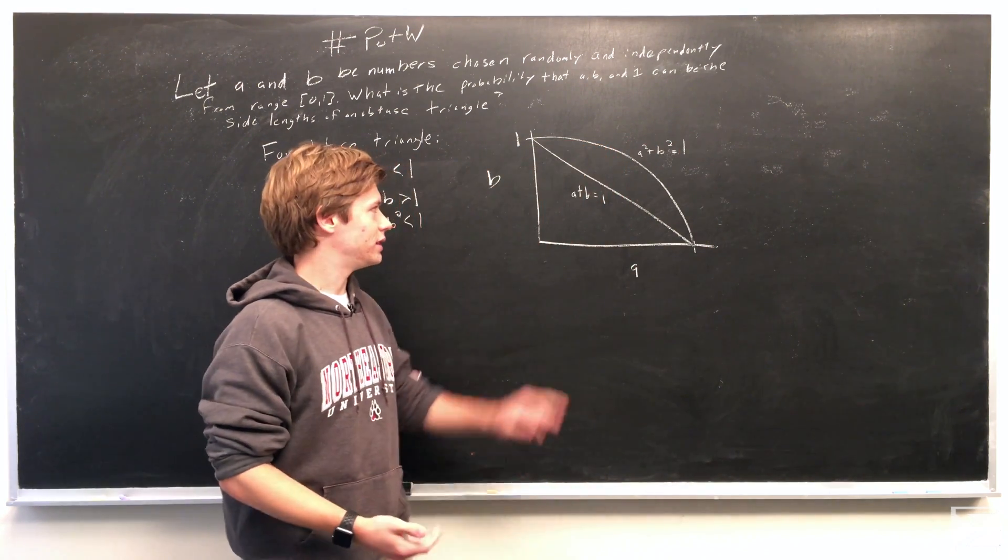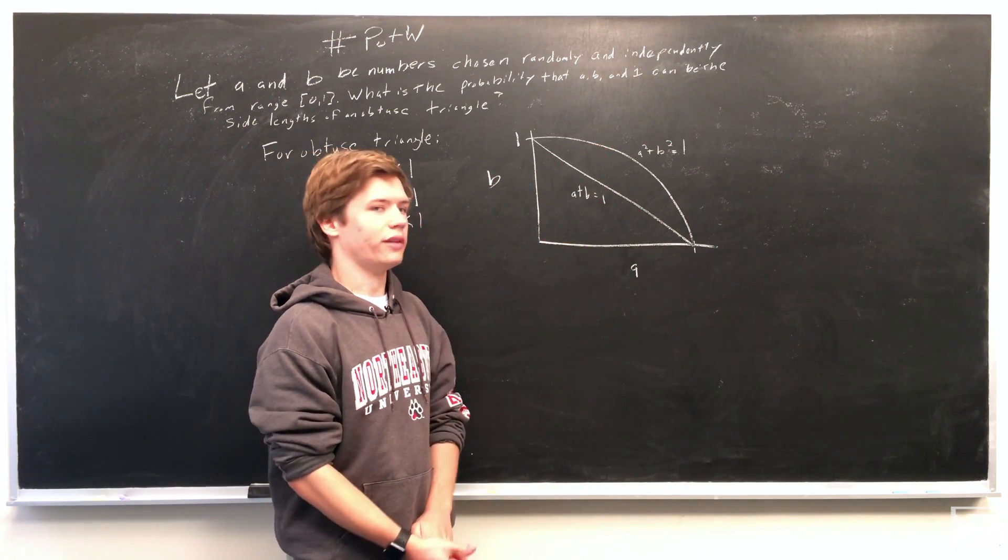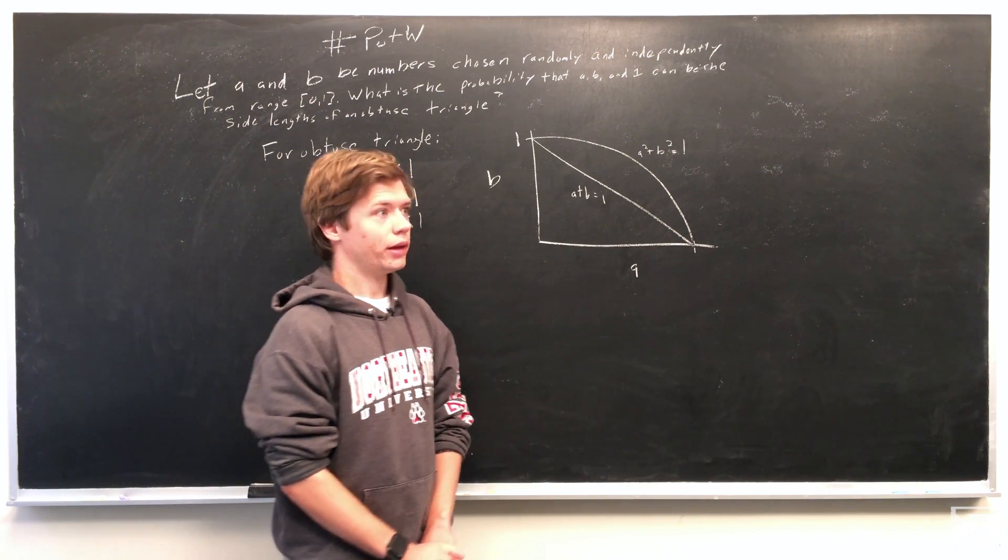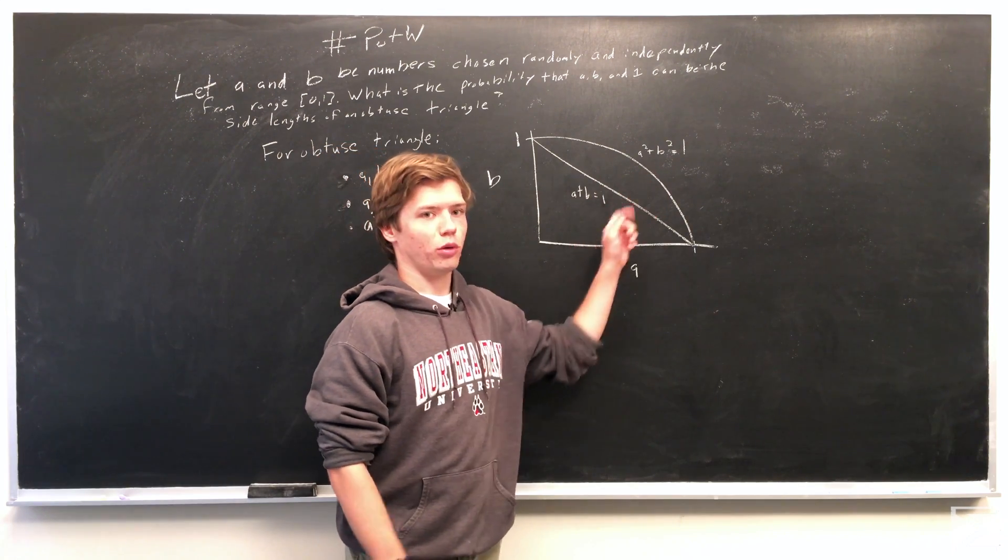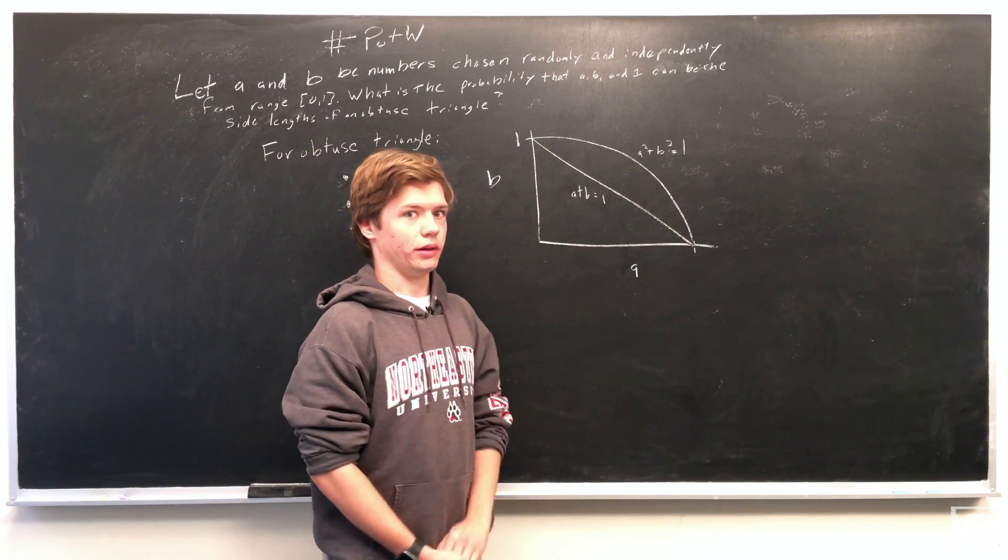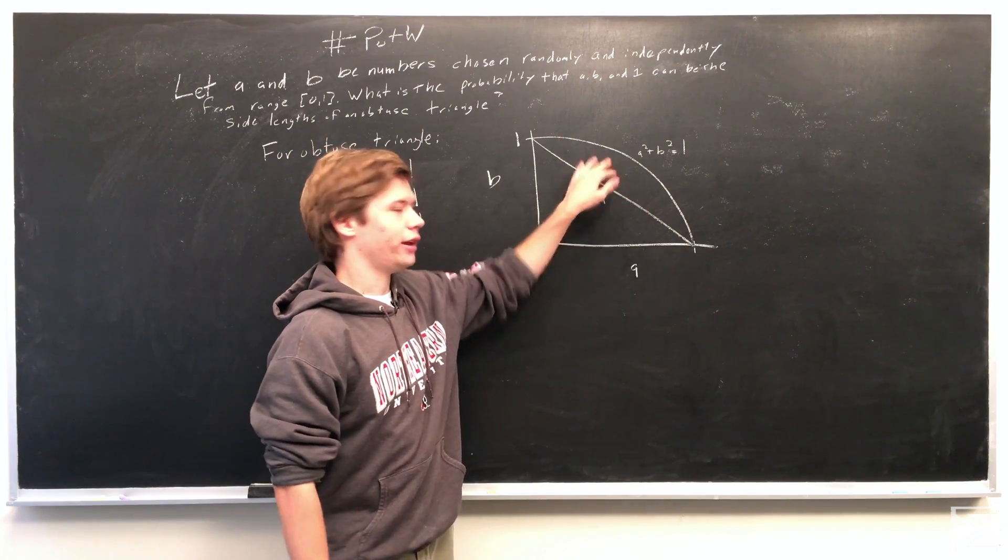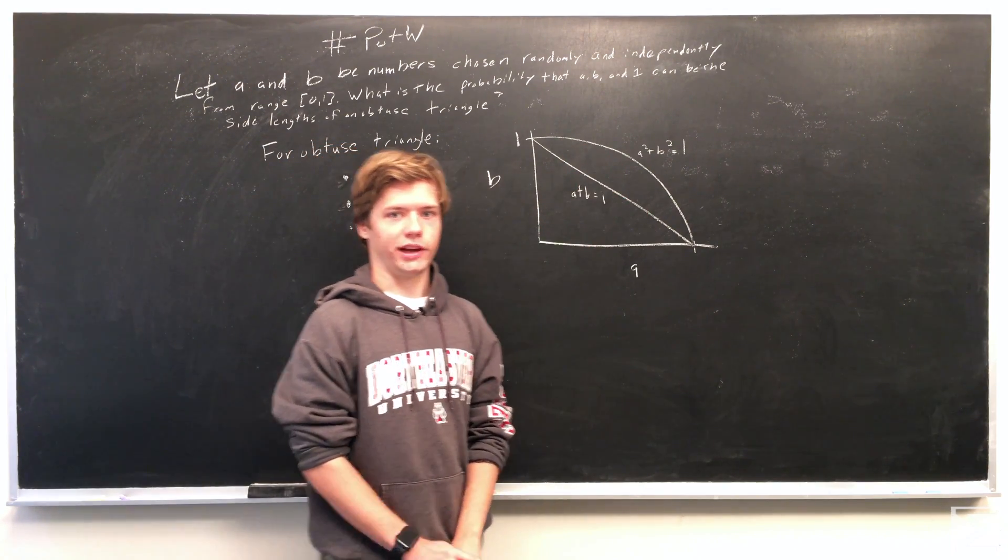So now this being drawn, we want to find the points that satisfy both A squared plus B squared being less than 1, and A plus B being greater than 1. And it's just this area right here, which I'm going to shade in right now.